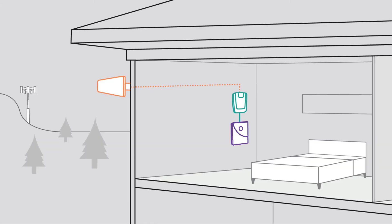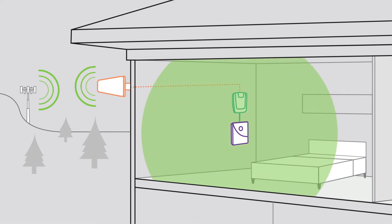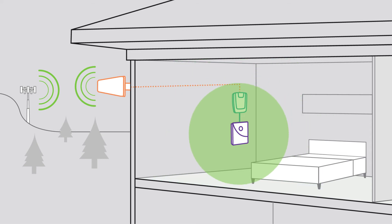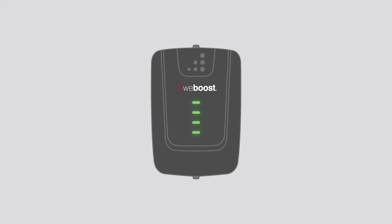While oscillation has to do with interference between the inside and outside antennas, overload is when the outside signal is too strong and the booster adjusts by lessening its gain. When this happens, the lights on your booster will blink from orange to green, which means the system is trying to work through the overload. Overload mostly happens when cell phone towers are too close to the booster.